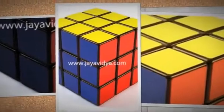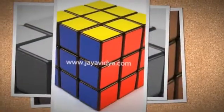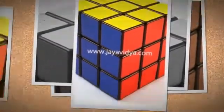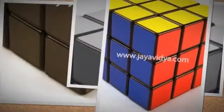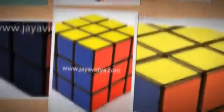Erno Rubik, an architect and professor at the University of Budapest, developed the first working prototype of the Rubik's Cube in 1974. He received a Hungarian patent in 1975.